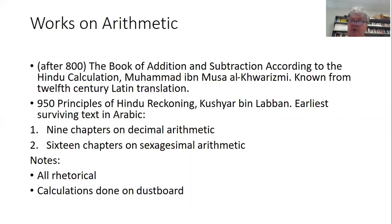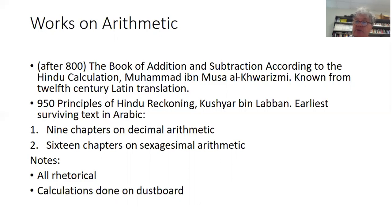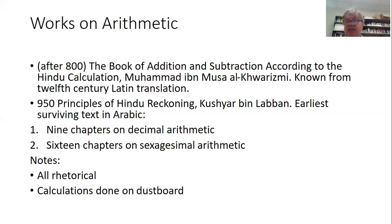The text we'll be looking at comes from 150 years later, around 950 — 'The Principles of Hindu Reckoning' by Kushyar ibn Labban — the earliest surviving text in Arabic on this subject. Part one has nine chapters on decimal arithmetic and part two has 16 chapters on sexagesimal arithmetic. They did both base 10 and base 60 because decimal fractions weren't well known yet, so fractions were handled in base 60 — again a testament to how strong the Babylonian computational techniques were.